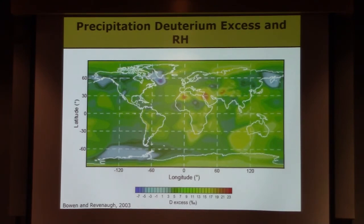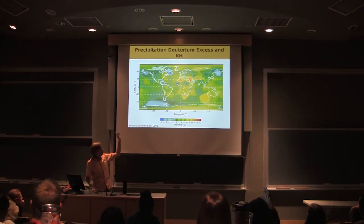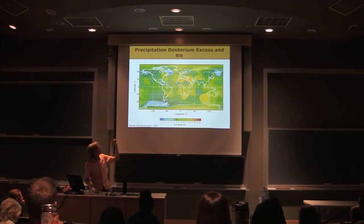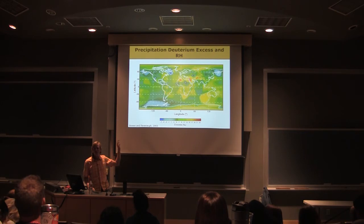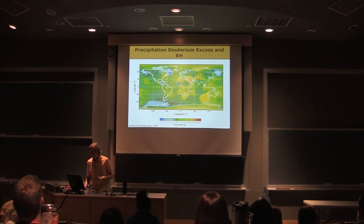All right? And so you can go and look at this in the original paper or in the notes or whatever and think about it a little bit, but these patterns are probably telling us something about regional differences and where the water vapor is coming from and the conditions over the ocean or over the source areas in different places.